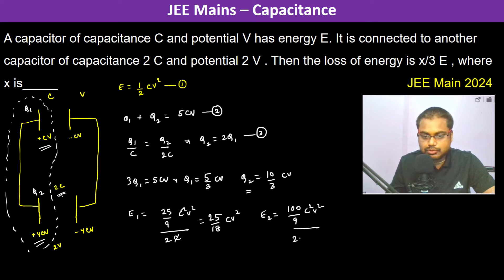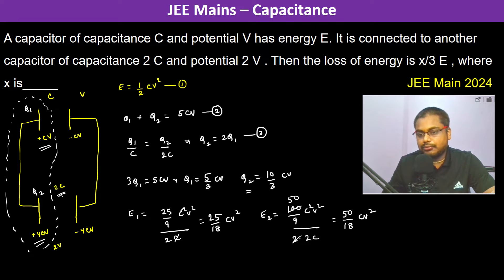For the second capacitor with capacitance 2C, the energy E2 equals q2² divided by 2 into 2C, which gives 50/18 CV². Therefore, the total final energy is E1 plus E2, which equals 75/18 CV².